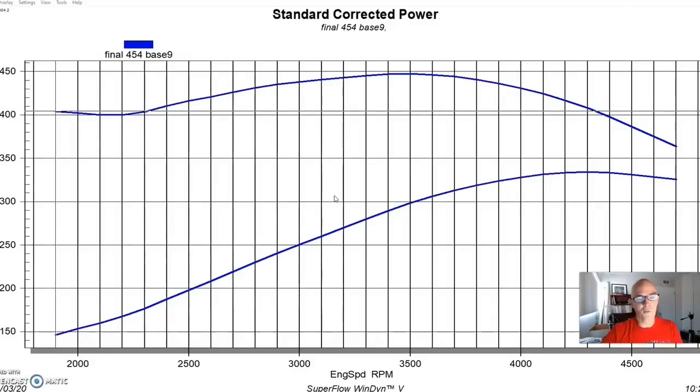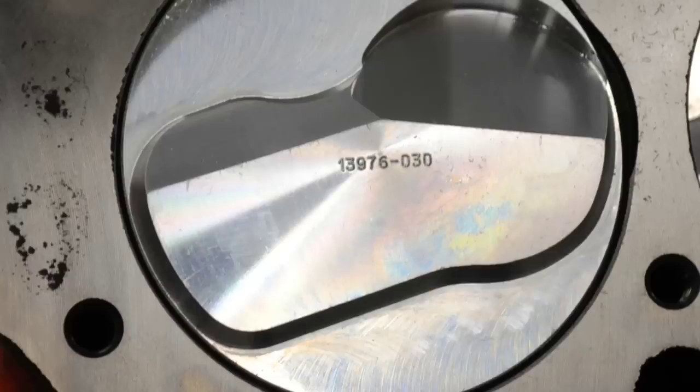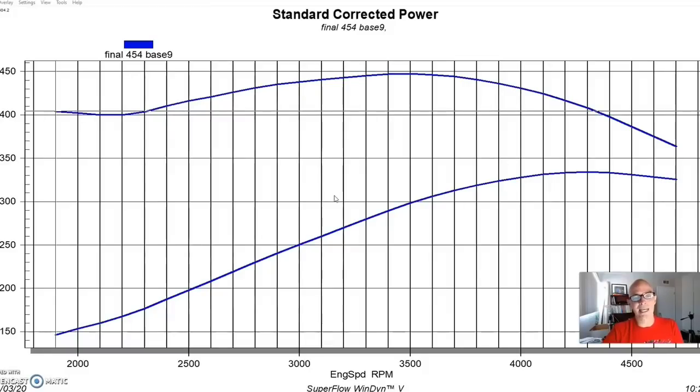We started out by boring the block 30 over to accept a set of forged pistons. We retained the factory cast crank and factory rods, but we upgraded the pistons to forged pistons. The forged piston wasn't really a necessity, especially for the power level we were looking for, but we did want to upgrade the dome design because what I wanted to do is increase the static compression on this thing. We stepped up to your typical 18 to 20 cc dome that increased the compression ratio up to about 9.5 to 1, which is a good benefit because these big blocks are all fairly low compression.